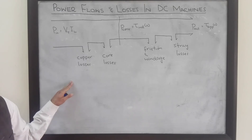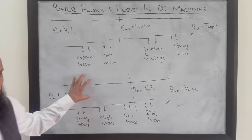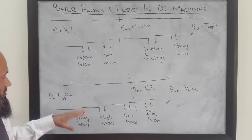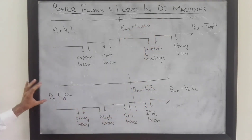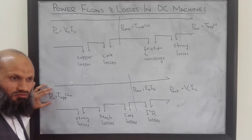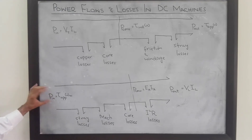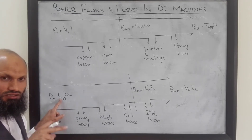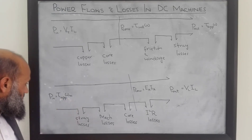A similar power flow diagram can be drawn for a generator. For a generator, the direction of power flow is almost opposite to that of the motor. Here, the supplied power is mechanical power — some external arrangement rotates the rotor of the generator. The input mechanical power equals the torque applied by the turbine multiplied by the rotational speed of the rotor.